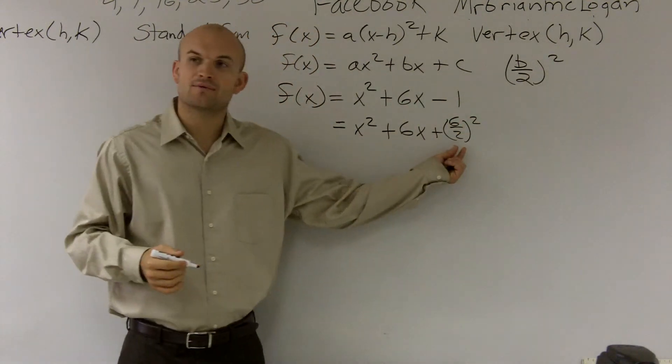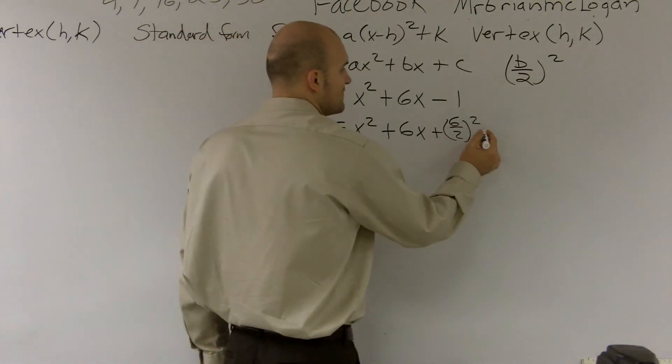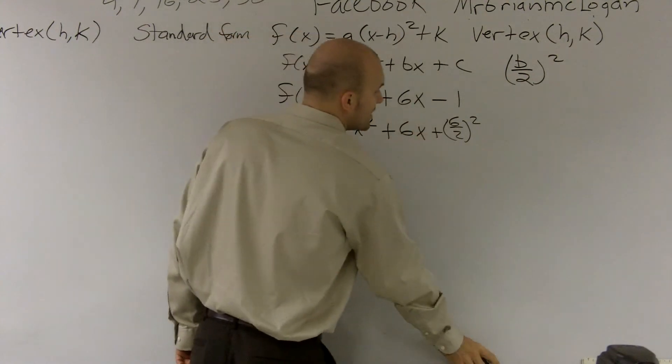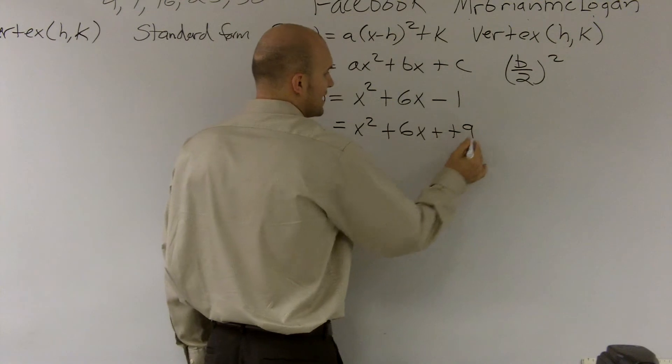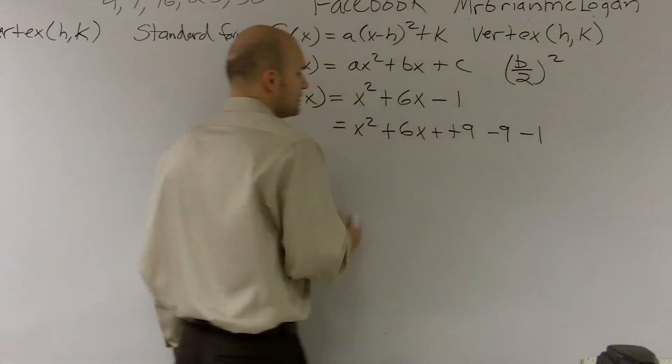All right. Now, if you add something on one side of the equation, you have to also make sure you subtract it. So I'm actually going to subtract that same value. Well, 6 divided by 2 is 3. 3 squared is 9, correct? So let's just write it like this. Plus 9, and then you have to subtract 9 minus 1.